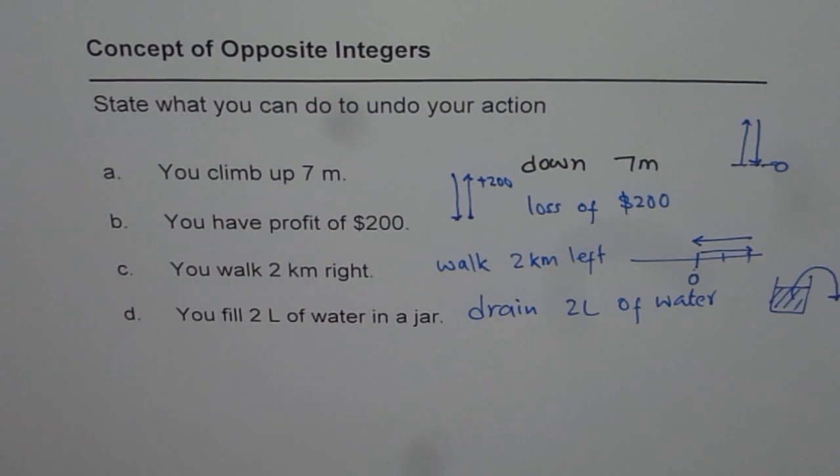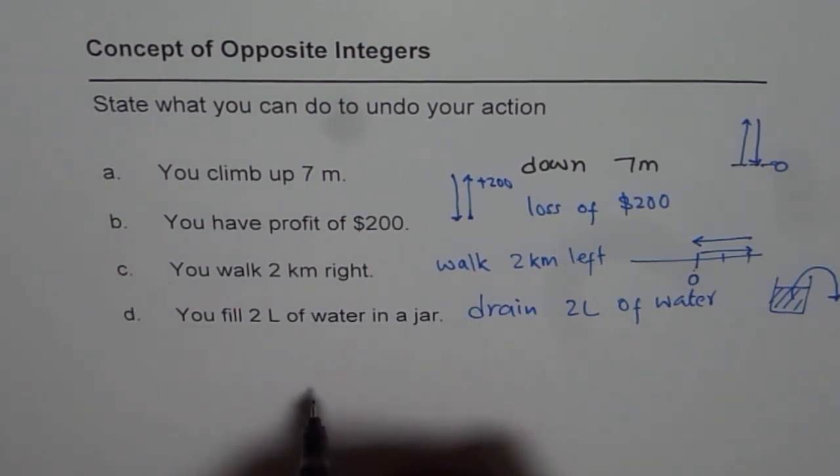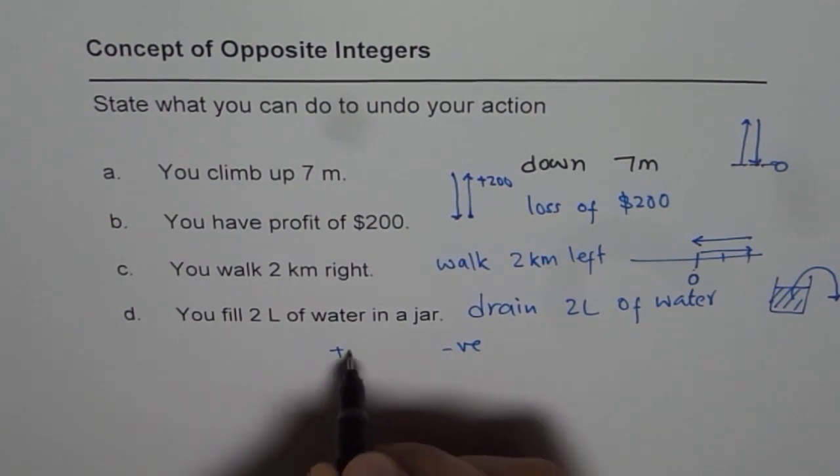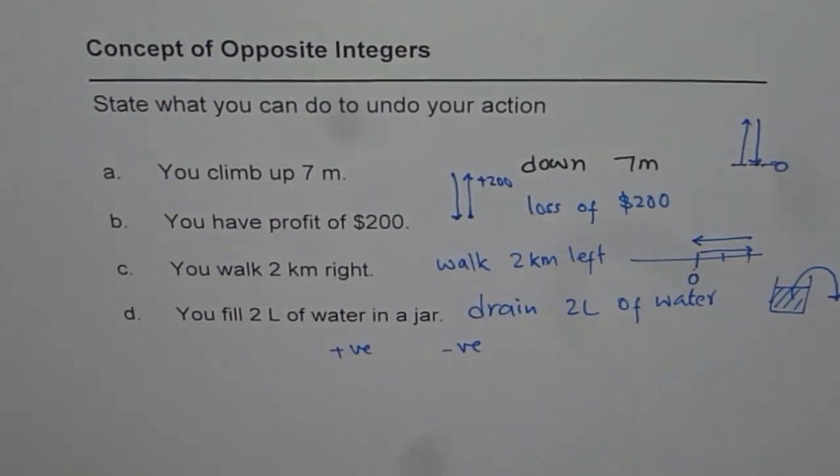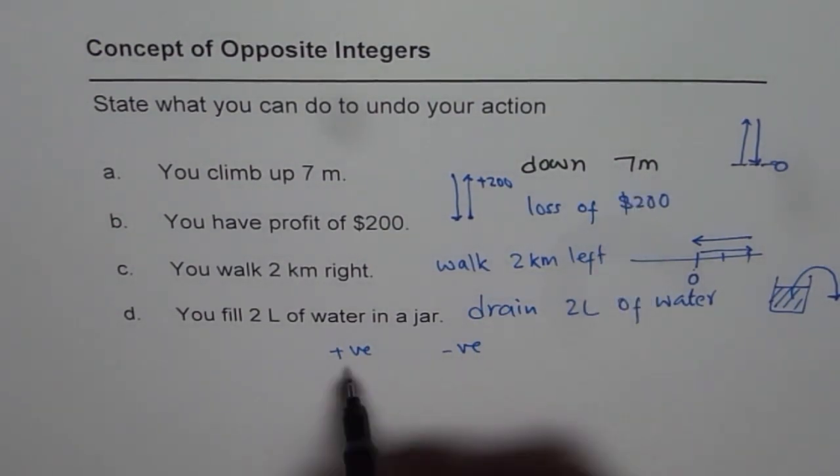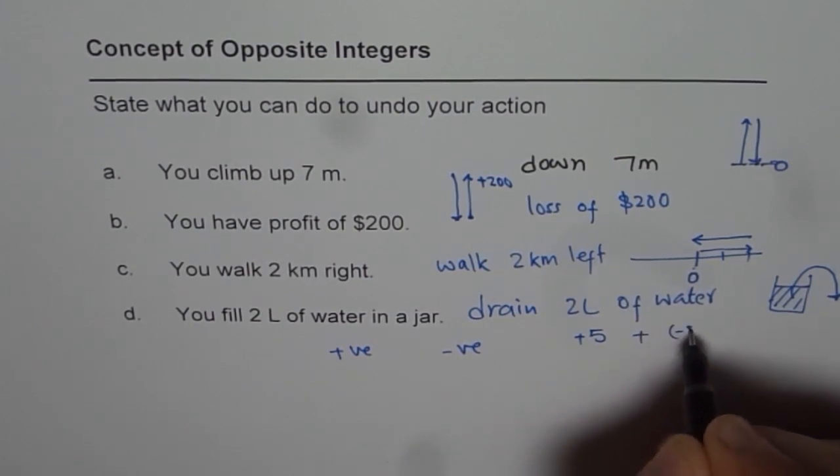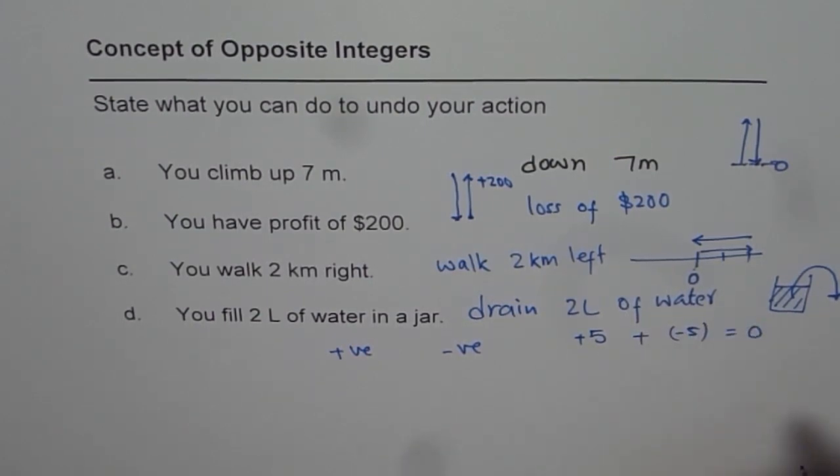From this exercise, what we learn is a basic concept of integers. Integers are positive and negative numbers, negative whole numbers. Now when you add equal and opposite numbers, that is to say, if I add plus 5 with minus 5, I should get 0. In this case, for example, 7 meters up and 7 meters down gives me 0.